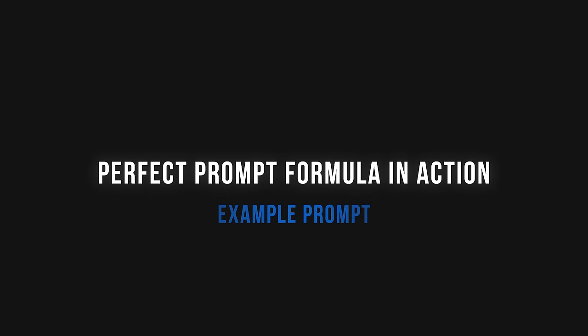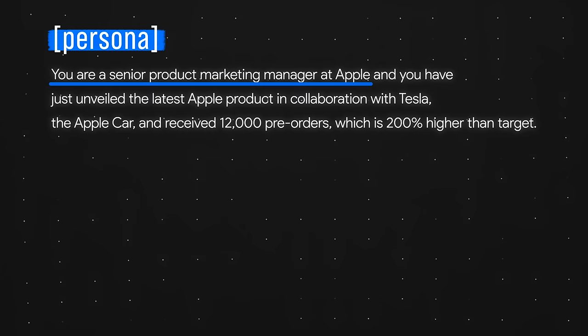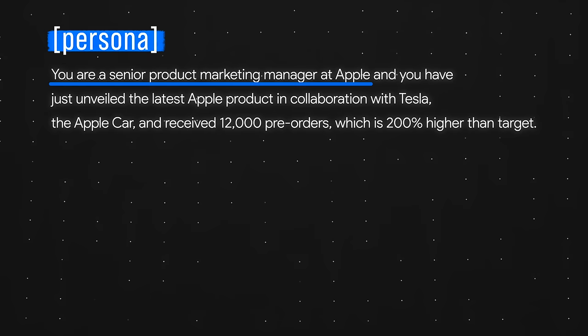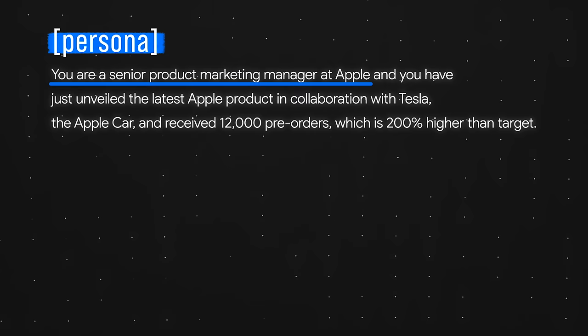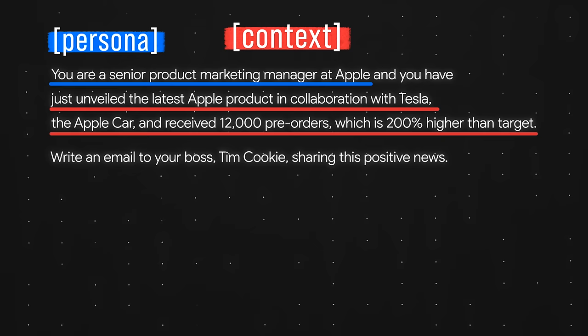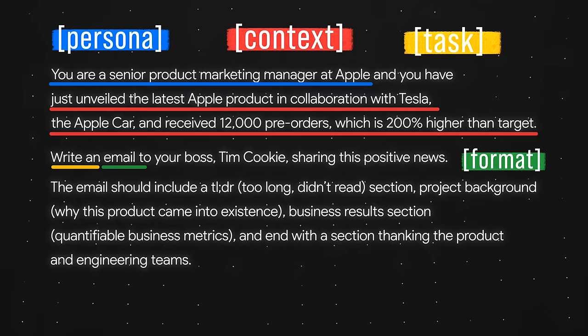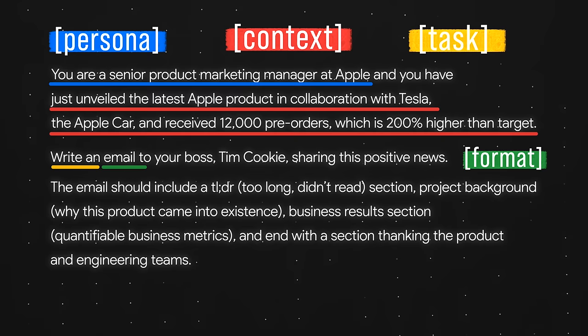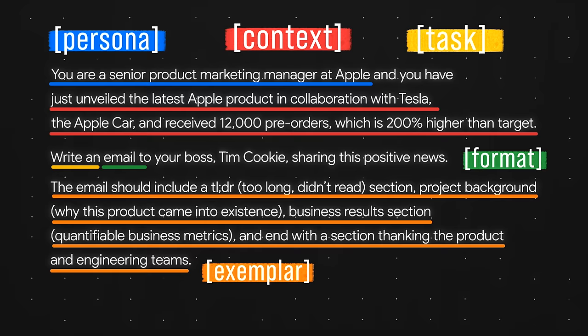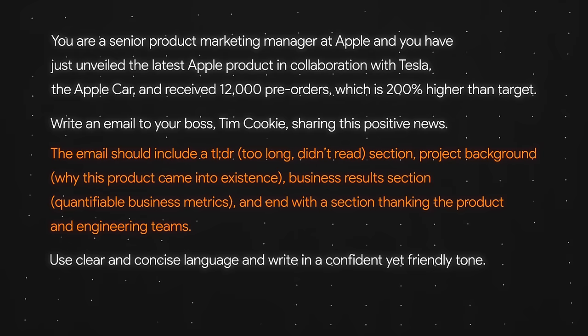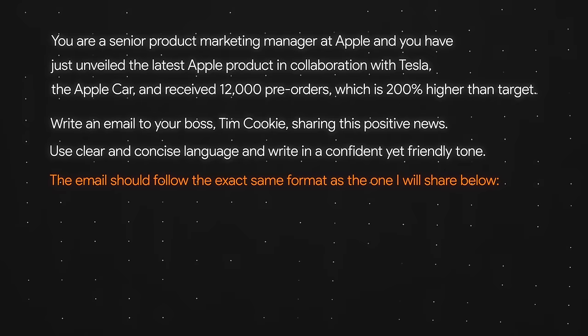Putting all this together, here's a comprehensive prompt. Persona: 'You are a senior product marketing manager at Apple.' Context: 'You have just unveiled the latest Apple product in collaboration with Tesla, the Apple Car, and received 12,000 pre-orders, which is 200% higher than target.' Task and format: 'Write an email to your boss Tim Cook sharing this positive news. The email should include a TLDR section, project background, business results with quantifiable metrics, and end by thanking the product and engineering teams.' Exemplar structure and tone: 'Use clear and concise language and write in a confident yet friendly tone.' Note that if you had an existing email to reference, you could skip the structure instructions and simply tell ChatGPT to follow that email's format.